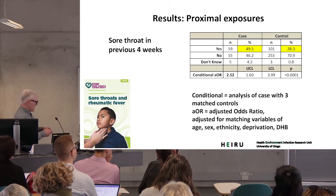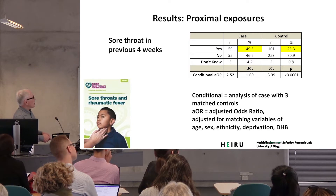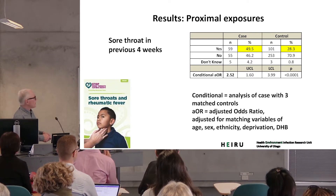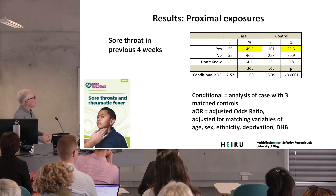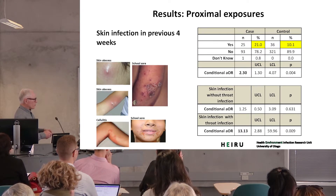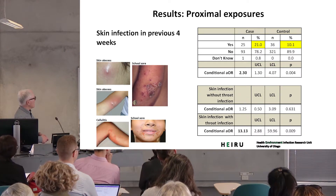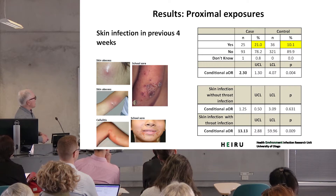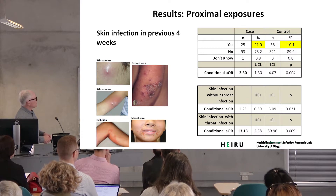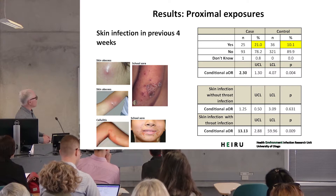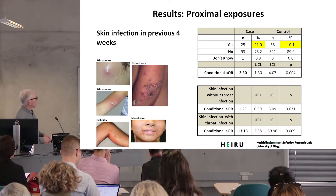Not surprisingly, a much higher proportion of cases reported a sore throat in the preceding four weeks than controls. The results more relevant to this meeting are those reporting a skin infection — shown via a card of a range of impetigo-type infections. This exposure was much more common in cases than controls, but less common than pharyngitis.